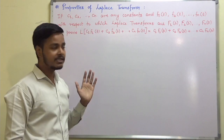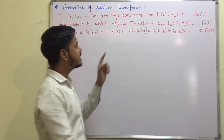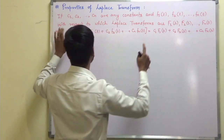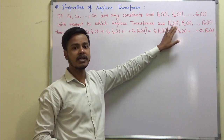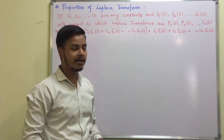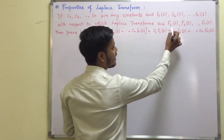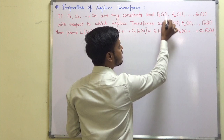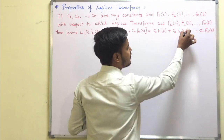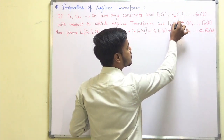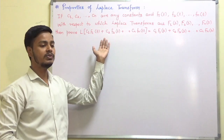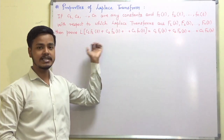So just read it once again. c1 to cn are constants, and f1(t), f2(t), ..., fn(t) are functions whose Laplace transforms are F1(s), F2(s), ..., Fn(s) — meaning F1(s) is the Laplace transform of f1(t), F2(s) is the Laplace transform of f2(t), and so on. We have to prove this result.